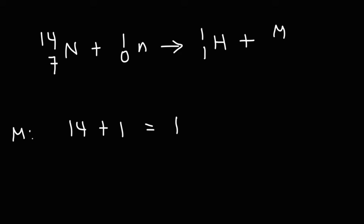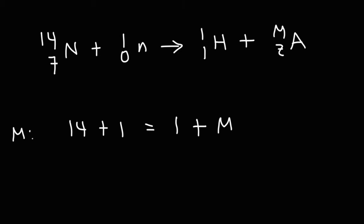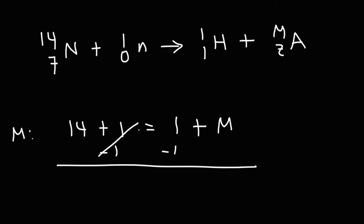M is for mass number, Z is for atomic number. So we have 14 plus 1 is equal to 1 plus M. Solving for M — if we subtract 1 from both sides, we get that M is equal to 14.